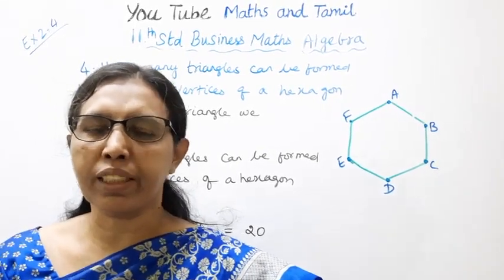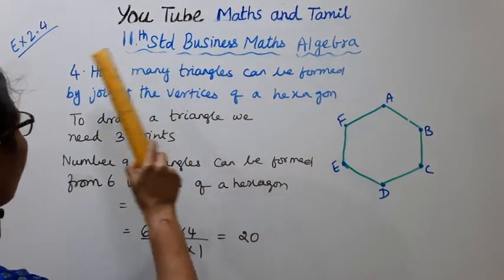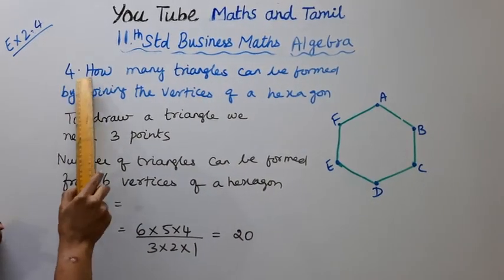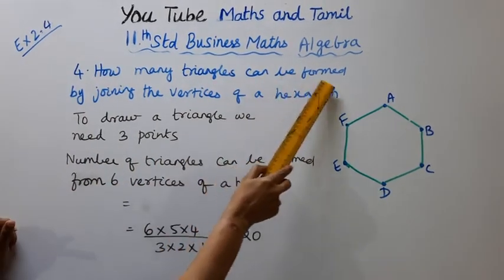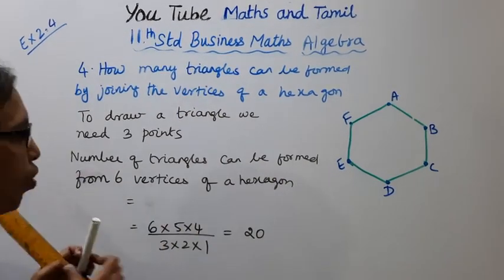Hello students, welcome to Maths and Tamil channel. 11th Standard Business Maths Algebra, Exercise 2.4, fourth problem: How many triangles can be formed by joining the vertices of a hexagon?